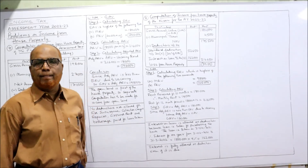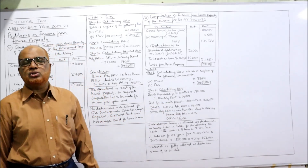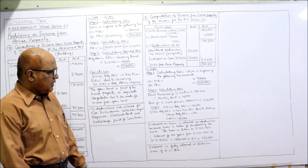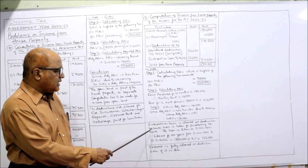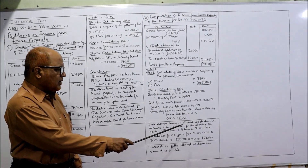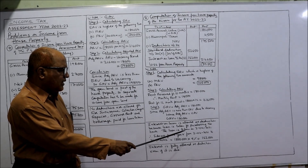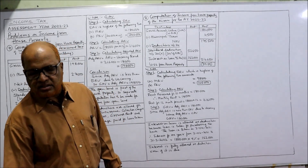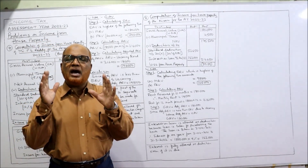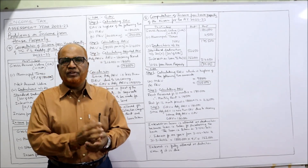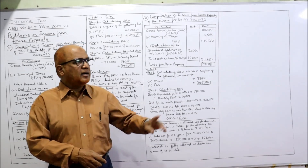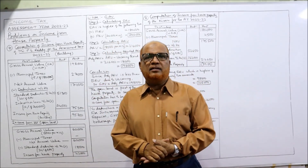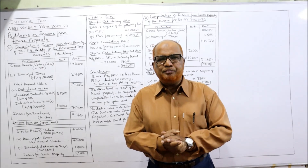NAV 1,75,500 minus total deductions 2,14,650 gives a negative value: minus 39,150. That is a loss from house property. Interest on loan is allowed as deduction because the loan was taken on 2nd April 2021 — interest for one year is 18 lakhs × 9% = 1,62,000. Write in the working note that interest will be allowed as deduction even if it is due and not paid, under Section 24B. So in this video, two problems — the 7th and 8th — have been explained. We will continue with the next two problems in the next video.